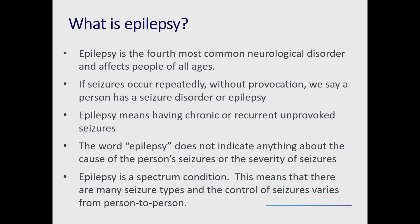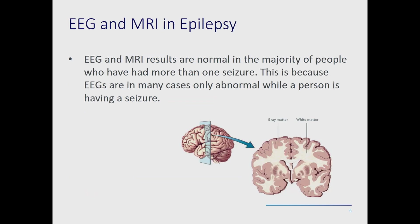Epilepsy is referred to as a spectrum disorder, meaning there are many seizure types and control varies from person to person. It's important to know that the EEG and MRI are normal in most people who have more than one seizure. EEGs in many cases are only abnormal if obtained during a seizure, so if you have epilepsy and an EEG is done while you're not having a seizure, it may very well be normal.